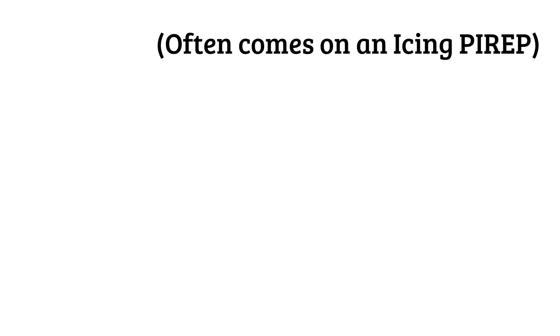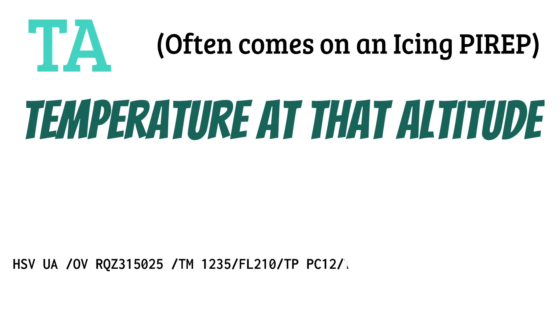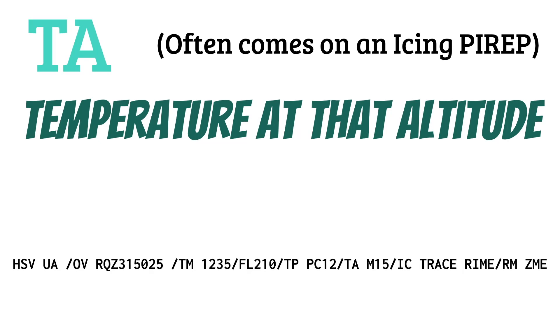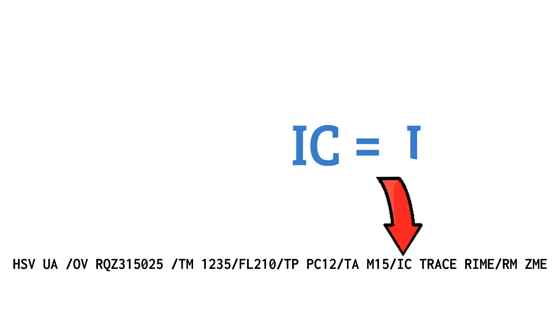On icing PIREPs, TA indicates the temperature at altitude in Celsius. For example, a PC-12 at flight level 210 reported minus 15 degrees Celsius — the M stands for minus. IC stands for icing; in one example the aircraft was picking up trace rime icing. That may not be a big deal for a pilot with anti-icing equipment, but flying through any icing in a Piper Cherokee is a different story.